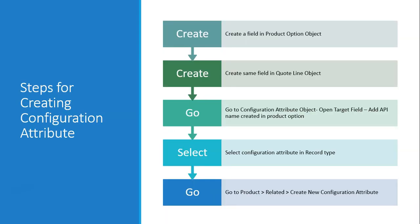Now let's see how exactly we set it up. These are the steps: firstly, create a field in the Product Option object. Then create the same field in the Quote Line object. Then go to the Configuration Attribute object, open the target field, and add the API name. Then select the configuration attribute record type. Finally, go to the product's related section and create a configuration.